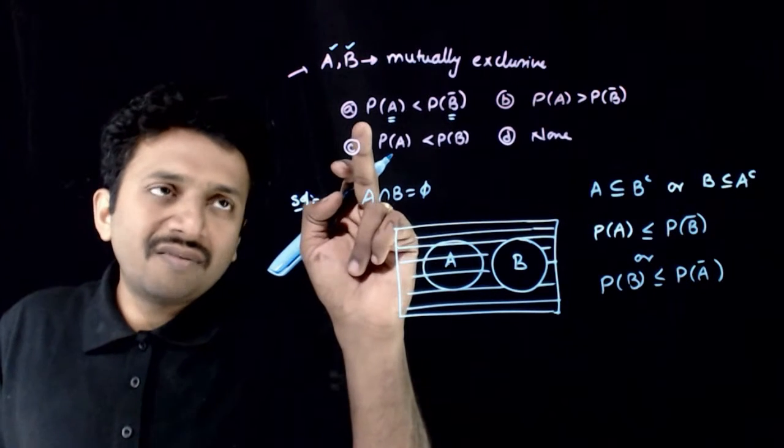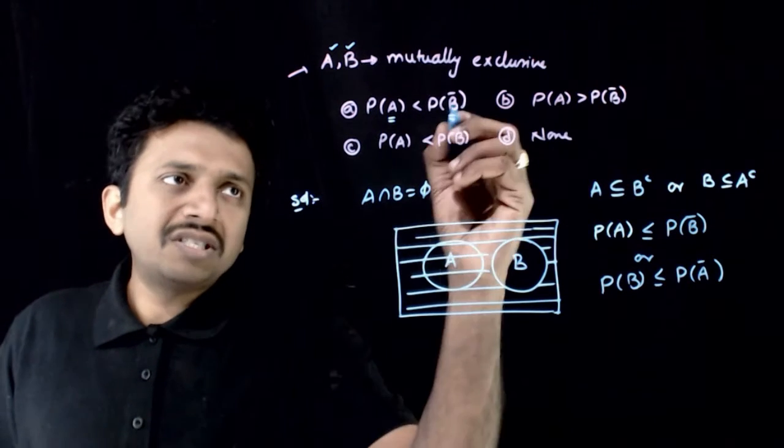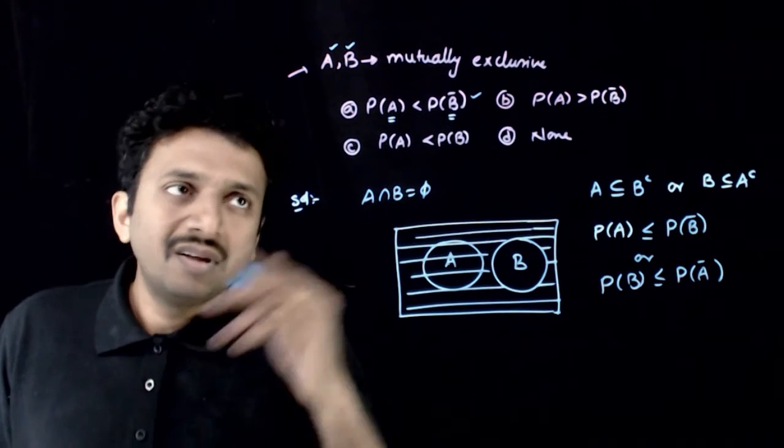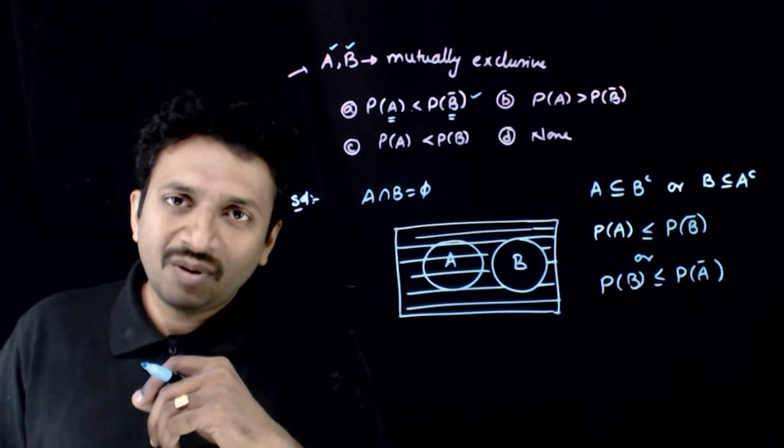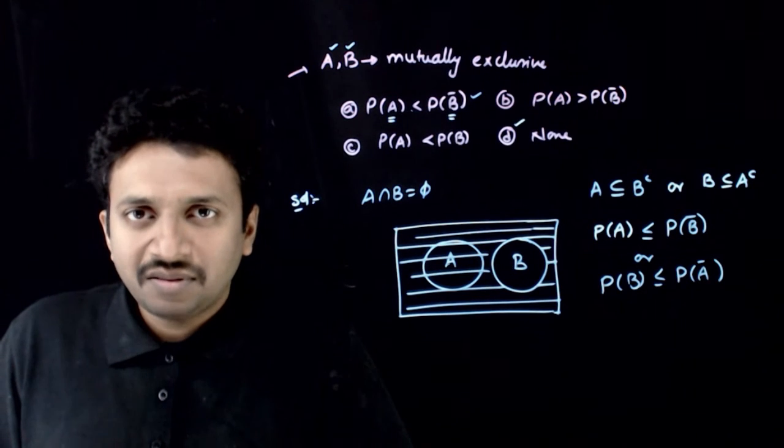But as you can see, the first option states that P(A) is strictly less than P(B complement), which need not be true. If you have equality, then this statement would be false. So option B is the right answer. Thank you.